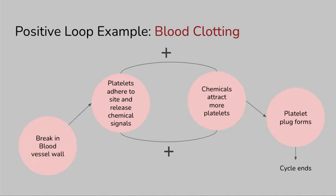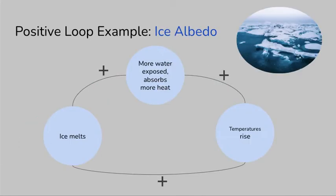Another positive feedback loop example that can happen within the environment is called ice albedo. Albedo indicates what percentage of solar radiation or sunlight is reflected by a surface. Ice is white and very reflective, but the ocean surface is dark and absorbs heat faster. When temperatures rise and ice melts, the white reflective surface disappears, exposing more water that absorbs more heat, causing temperatures to rise further and more ice to melt. You can see how this cycle is a positive feedback loop within an ecosystem. Keep this in mind when we get to our unit on ecology.